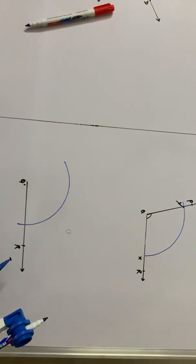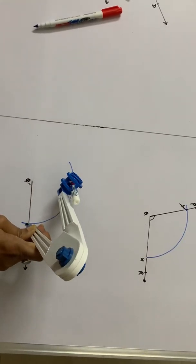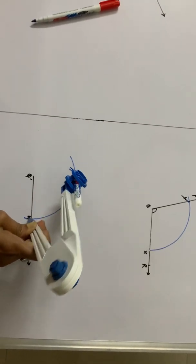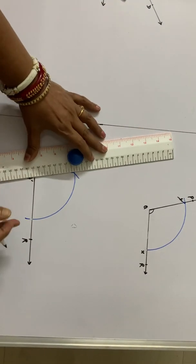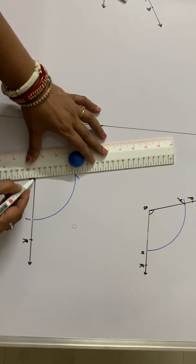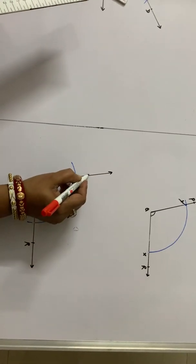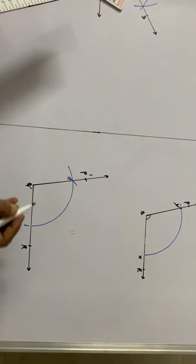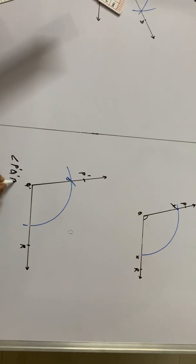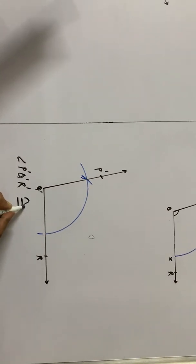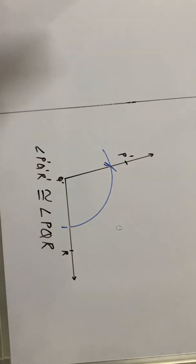Now, keeping the pointer here at this point, we will cut the arc. Mark point P dash. This angle P dash Q dash R dash is congruent to angle PQR. Thank you.